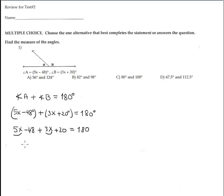5 and 3 is 8X. Negative 48 and 20 subtraction is minus 28. The sign of the bigger number equals 180.